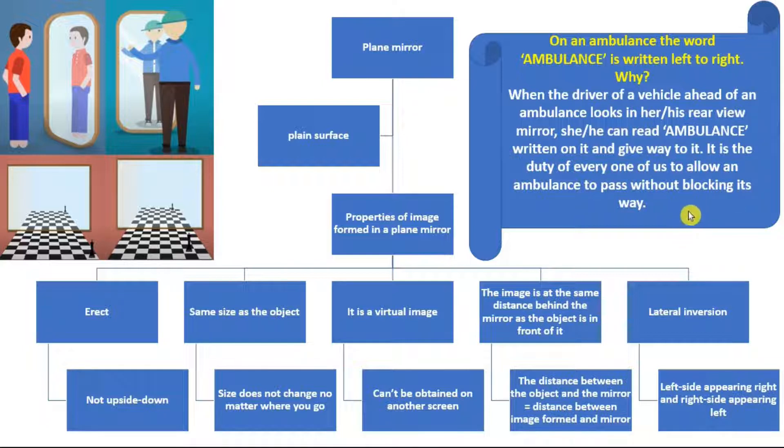The reason for this is that if it is written in a laterally inverted way on the ambulance, so in the driver's rear view mirror, the driver can see it in a proper way because in the mirror again it gets laterally inverted. So if on the ambulance it is written laterally inverted, when he sees it in his mirror again it gets rotated and he gets the proper word ambulance the way we are used to reading it. And if he sees that and he is blocking the way of the ambulance, he can give way to it because it is our duty to give way to the ambulance so that we can save the life of the patient.